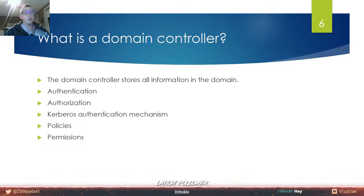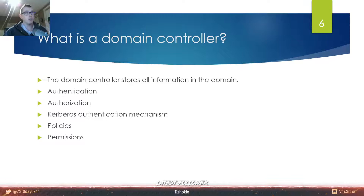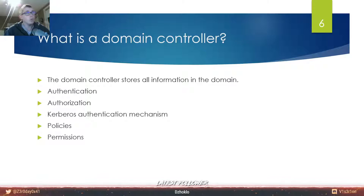What is a domain controller? The domain controller stores all information in the domain - it is the central point of the domain, not the forest. The domain controller takes care of authentication and authorization. It mainly uses Kerberos authentication. That is why when you make a domain controller you always have some users that are created automatically when you promote a machine to a domain controller. For example the krbtgt user - that's the user that takes care of all authorization. If you compromise that user you can make a golden ticket, and a golden ticket attack is something we will go into in a later lesson.